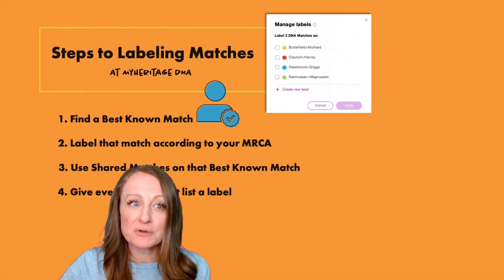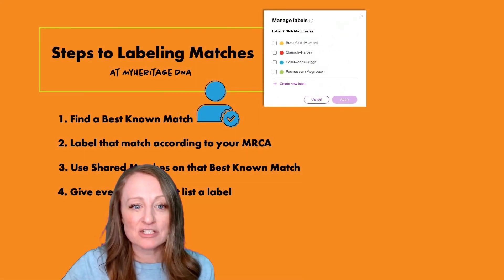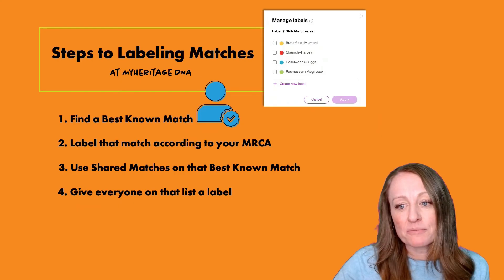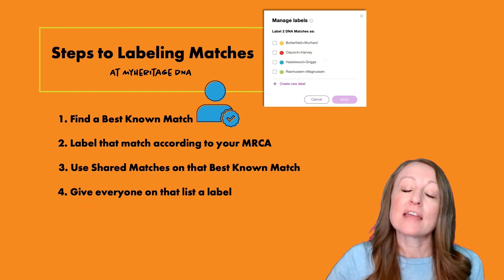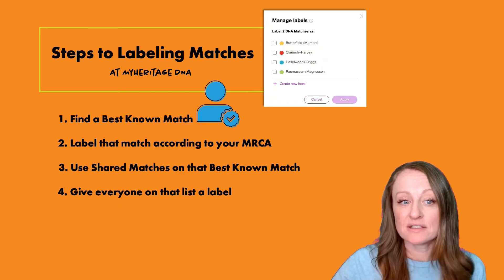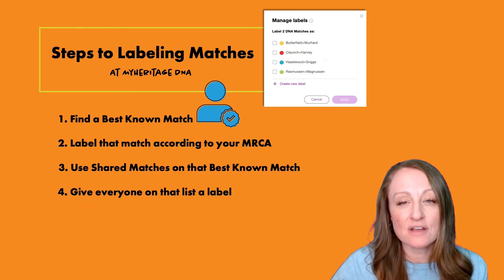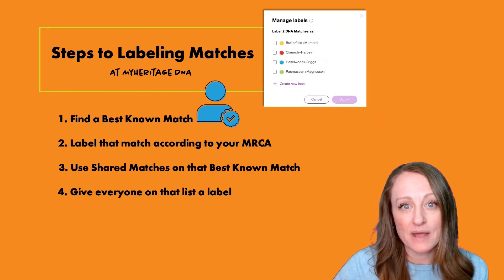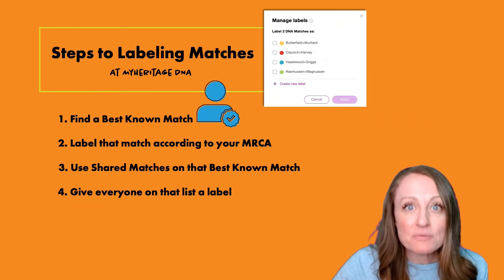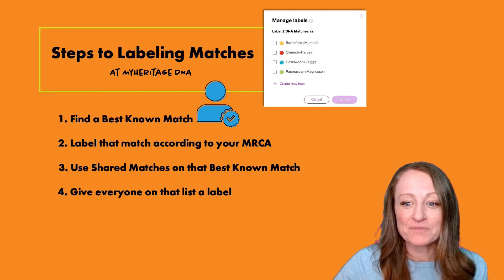Let's review. The steps to labeling your matches are: find a best-known match, label that match according to your MRCA, use shared matches on that best-known match, and label everyone on that list with that label.